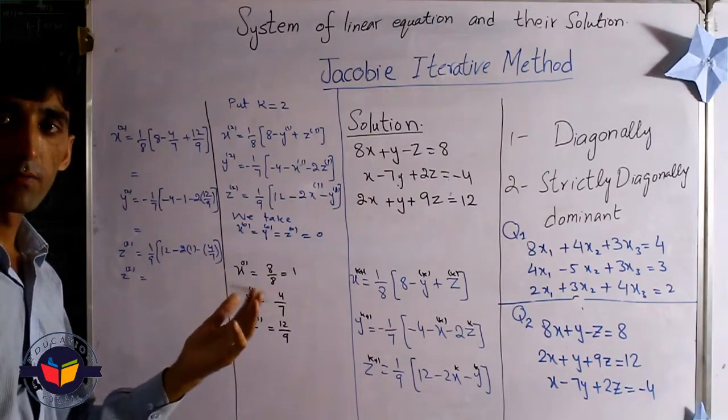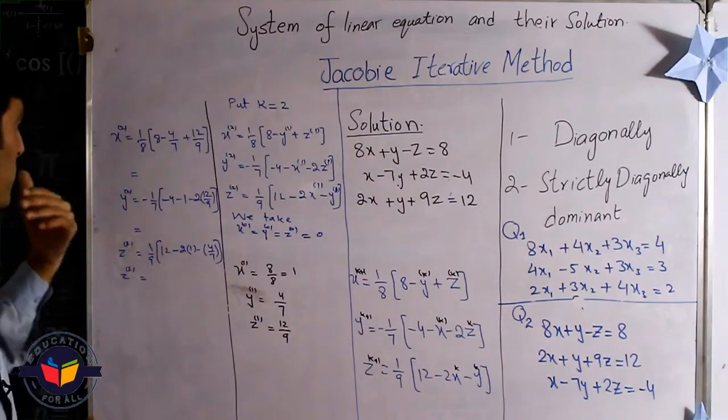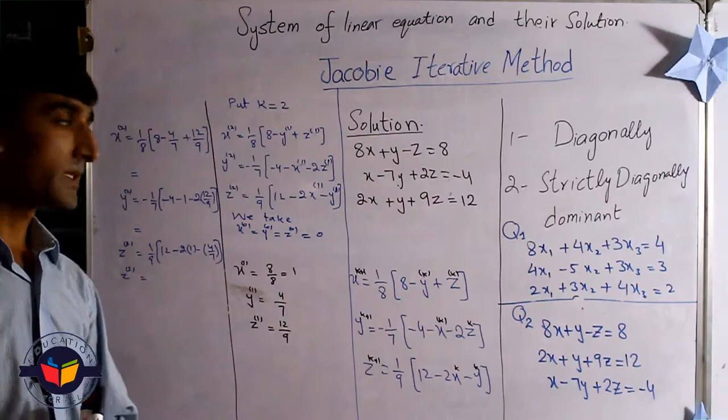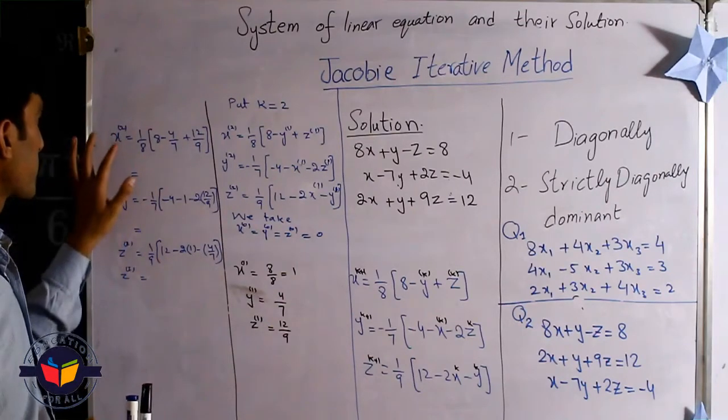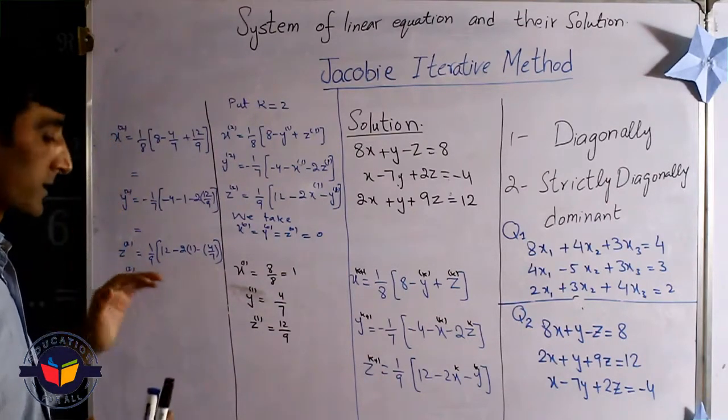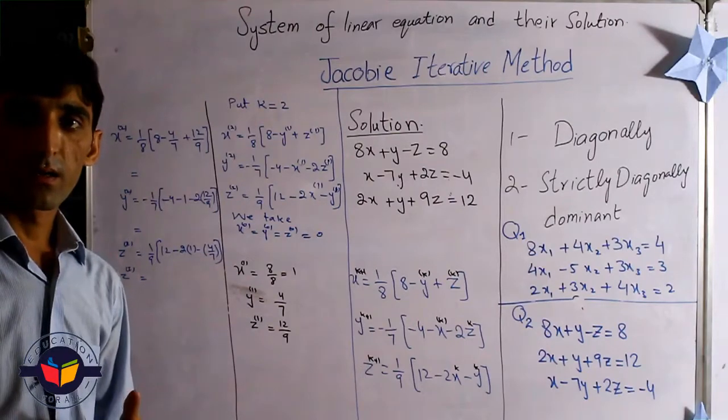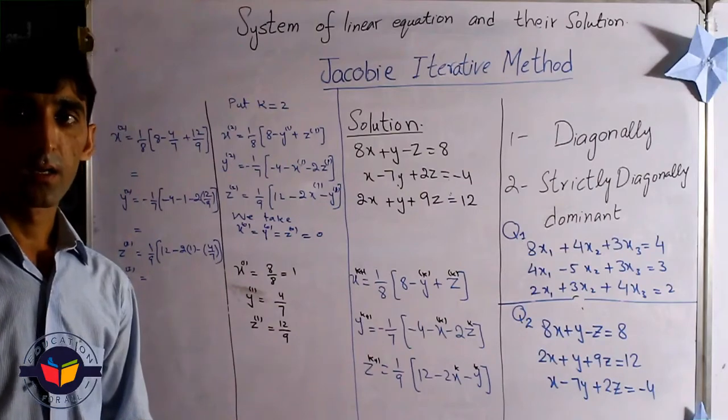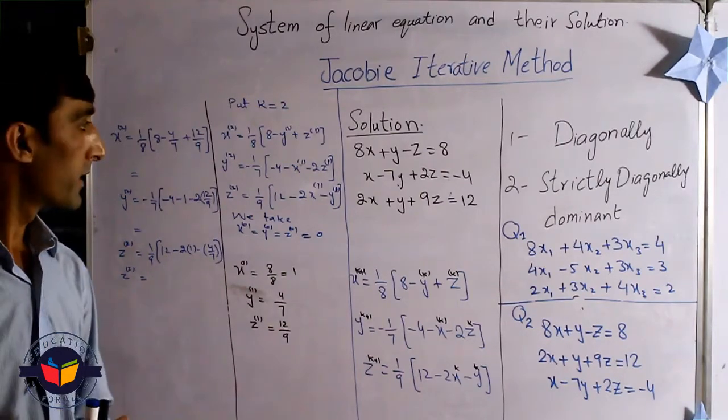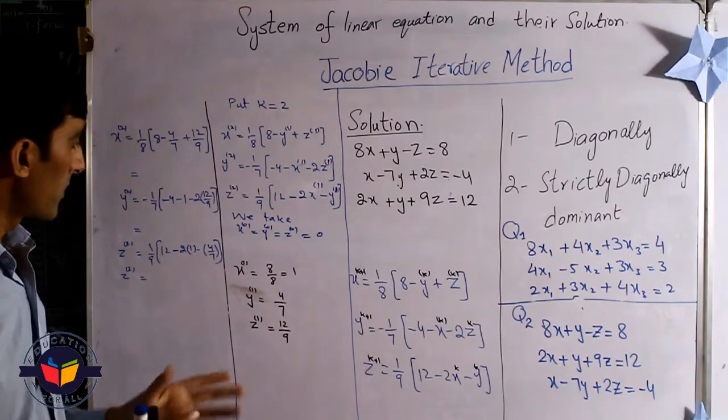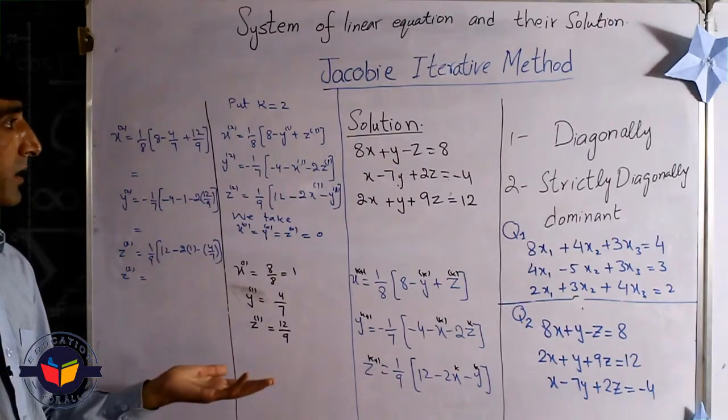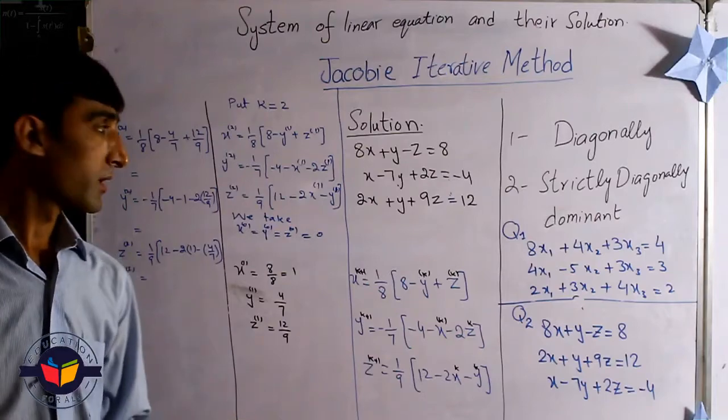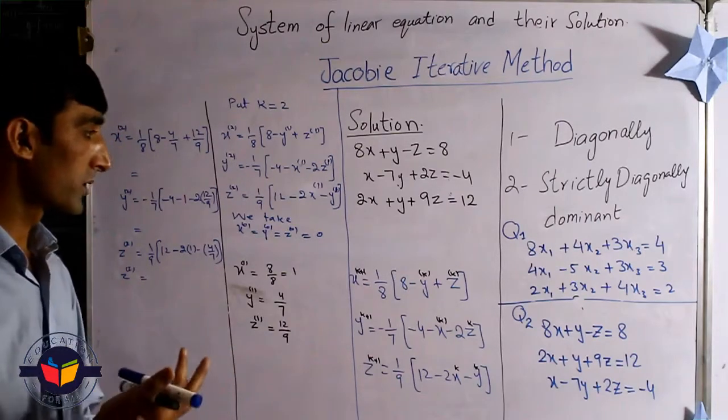We can go forward and take further more iterations. When do we stop the iteration? When we see the results of x, y, and z are repeated or near to each other, then we stop the iteration. But if the given problem asks only for the third iteration, we stop on the third iteration or fourth iteration.